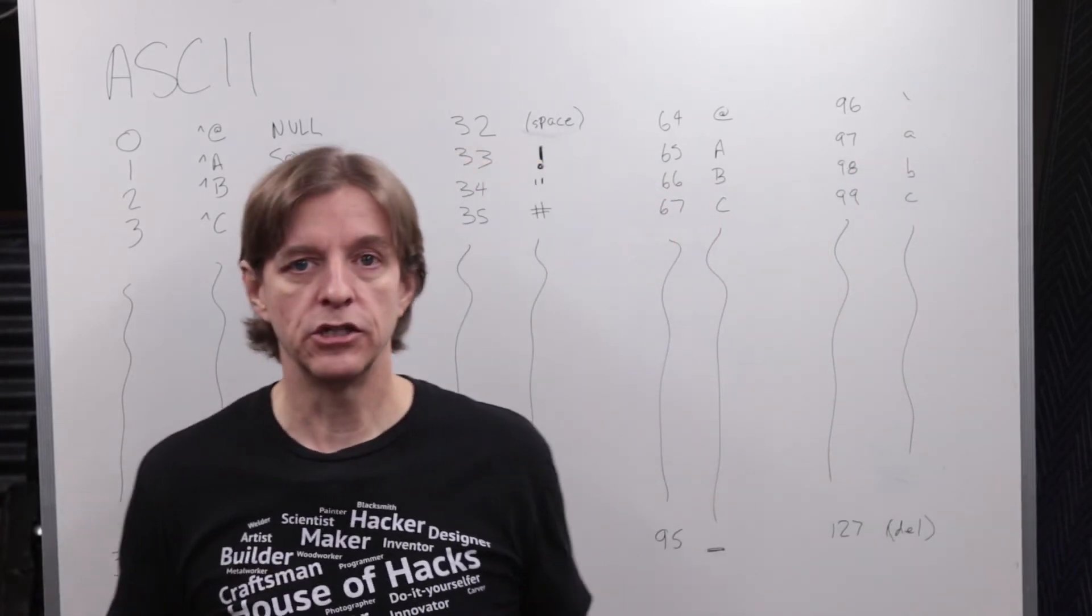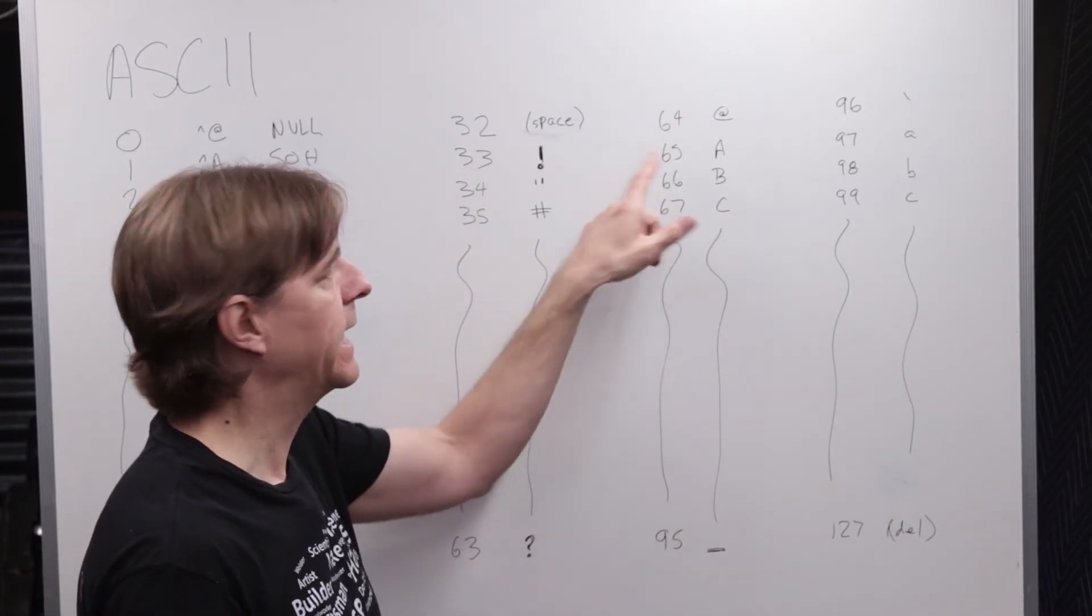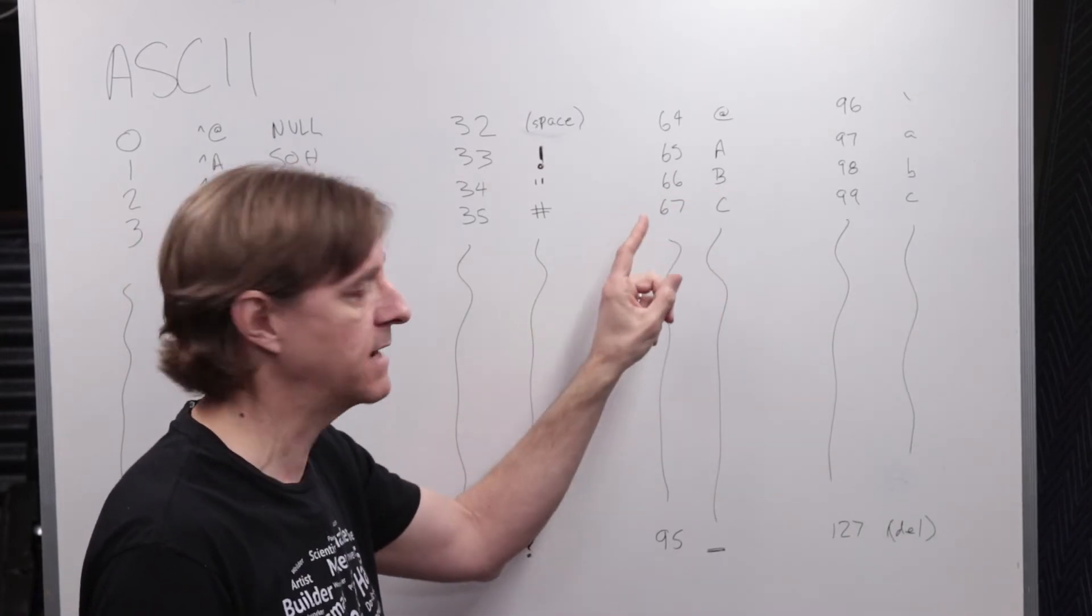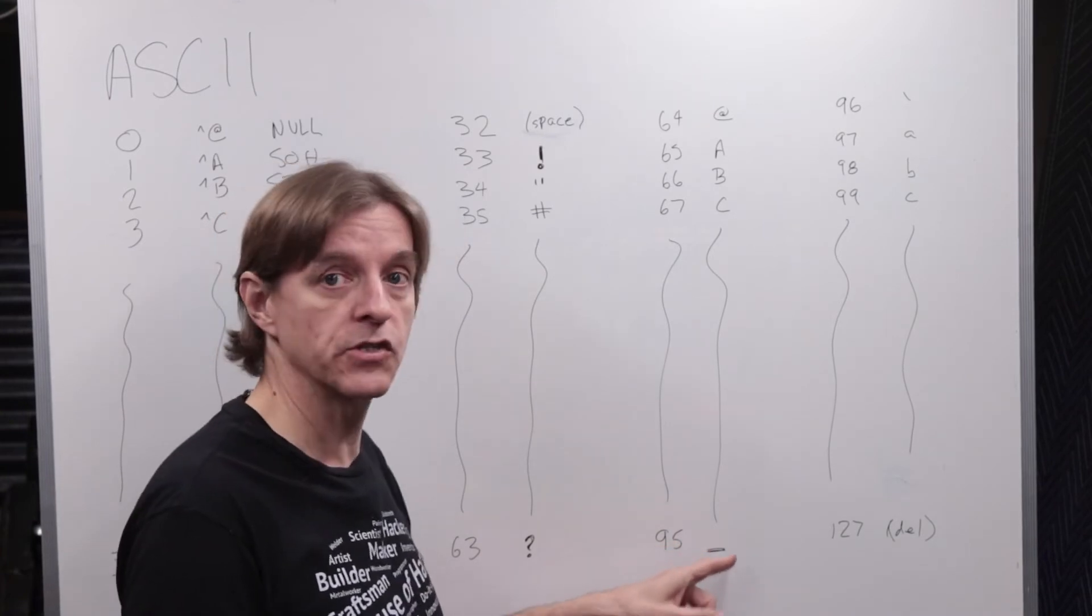The next group of 32 were the capital letters. It started with an at sign at 64, capital A was 65, capital B was 66, capital C was 67, and so forth, down to 95 which was the underscore character.